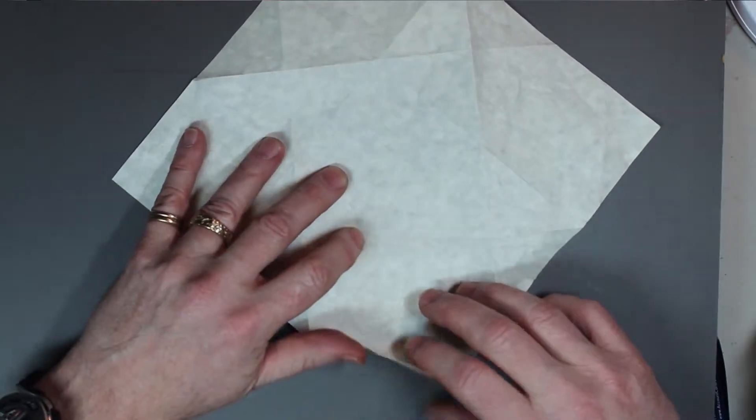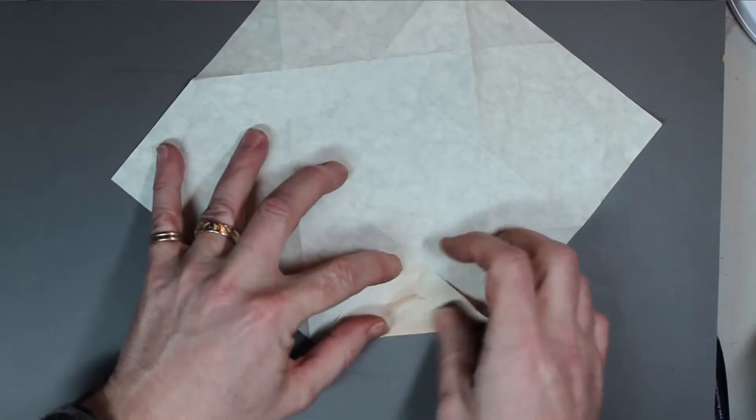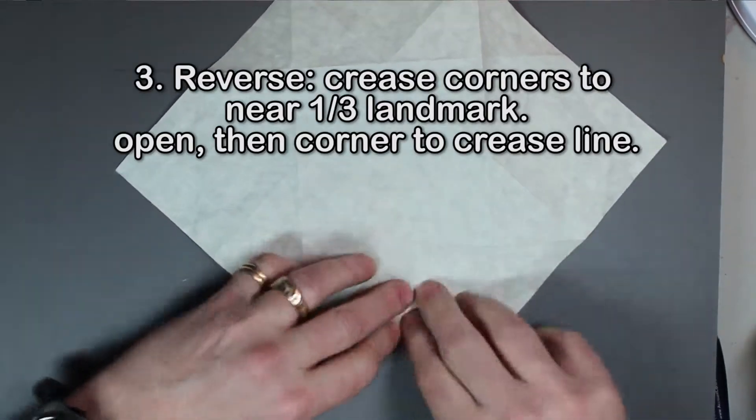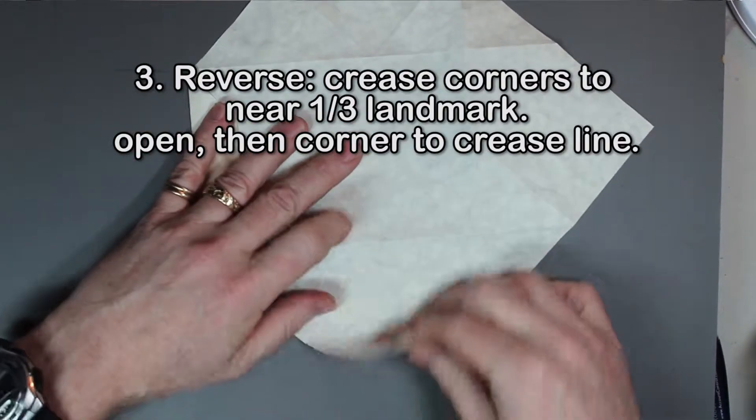On the back side we're going to take the corner and crease it to the near one-third, and then I'm just going to crease this little rim like so. Repeat this for all four corners.